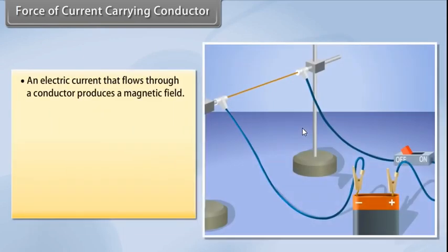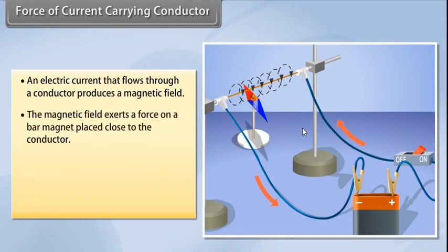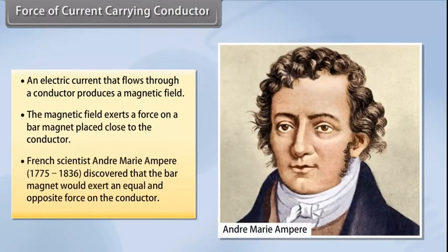Fill in the blank with force of current carrying conductor. We have seen that an electric current that flows through a conductor produces a magnetic field. The magnetic field so produced exerts a force on a bar magnet placed close to the conductor. French scientist André-Marie Ampere, 1775-1836, discovered that the bar magnet would also exert an equal and opposite force on the conductor.